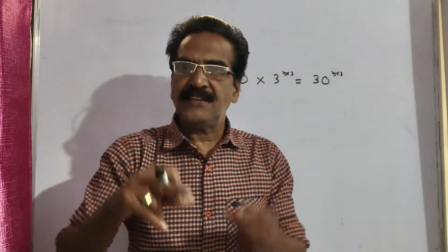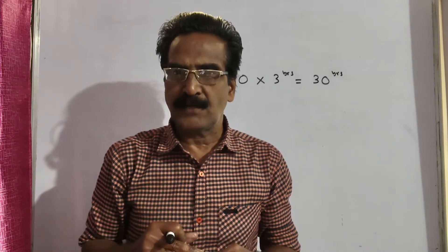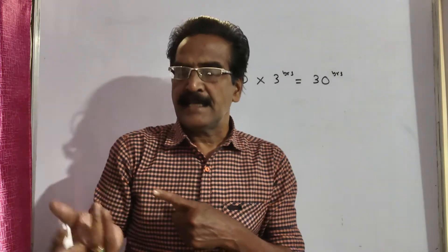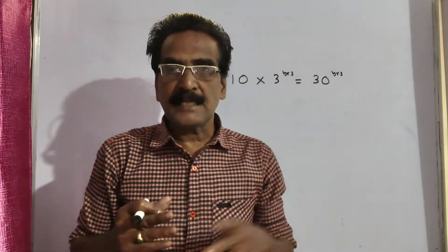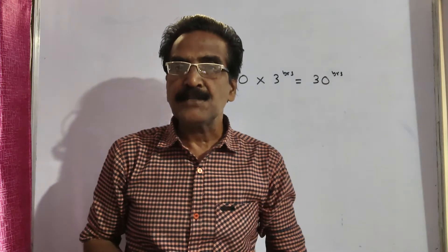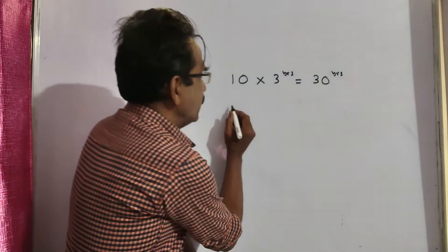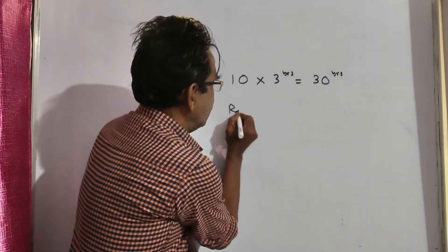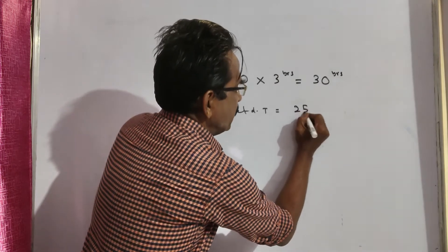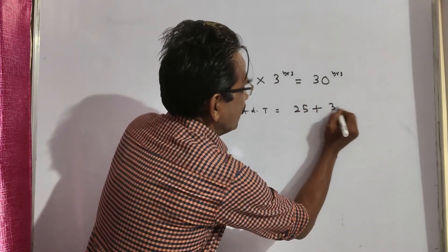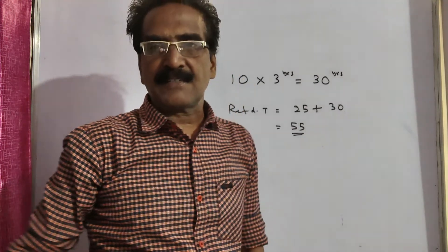A 25-year-old person joined. So the age of the retired teacher must be 30 years more than the new teacher. So the age of the retired teacher is equal to new teacher's age plus 30, that is equal to 55 years. 55 years is your answer.